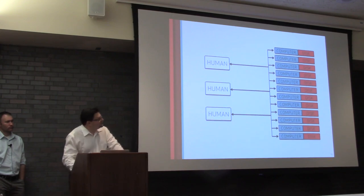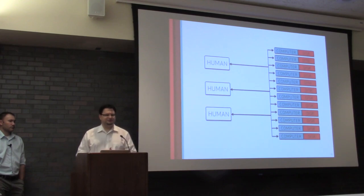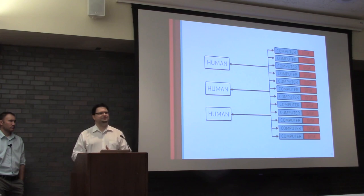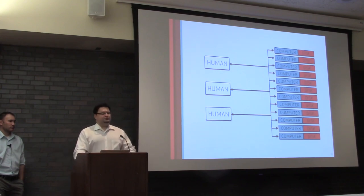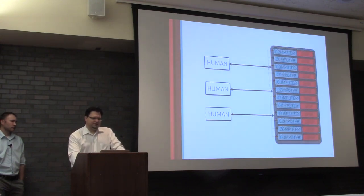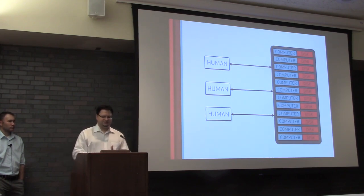Here is an alternative: instead of making what you have today bigger, you take what you have today and add many units of it — making it broader instead of bigger. This is scaling out instead of scaling up, and the units remain as cheap as they were to begin with. You're not buying the giant expensive computer; you're buying many small cheap computers and multiplying the number of those cheap units.